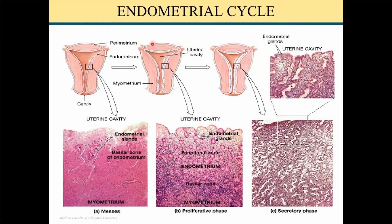Coming to the endometrium, related to the uterus. There are three different phases of the menstrual cycle. The menstrual phase involves shedding of the functional layer of the endometrium. In the proliferative phase the functional layer is growing.